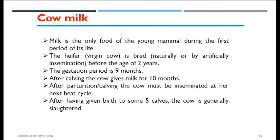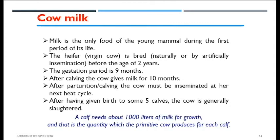A calf approximately needs about 1,000 liters of milk for growth, but this quantity is specifically associated with primitive cows. With the help of selective breeding, the cow's yield has been increased to an average of approximately 6,000 liters of milk per calf. Sometimes this yield is increased to such an extent that the figure has reached approximately 14,000 liters or more in certain cow breeds.